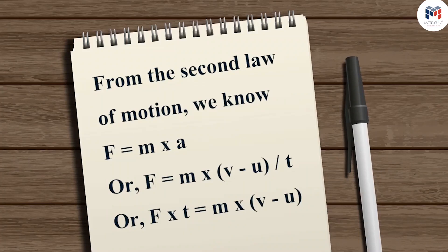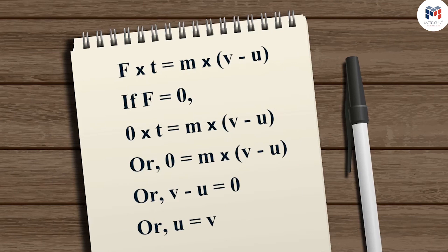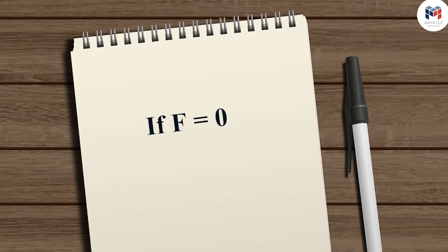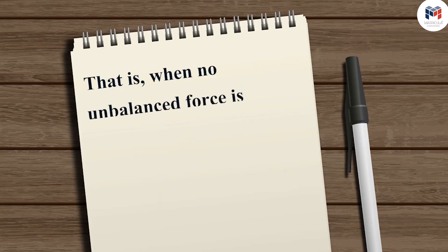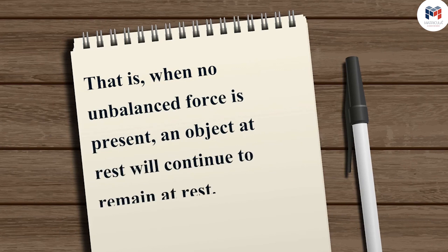From the second law of motion, we know F = MA, or F = M(V − U)/T, which can be written as F × T = M(V − U). From this equation, we may observe that when F = 0, initial velocity U equals the final velocity V. That is, if no unbalanced force is applied, the object will continue to move with uniform velocity U. Also, if the initial velocity is 0, then the final velocity will also be 0 — meaning when no unbalanced force is present, an object at rest will continue to remain at rest.